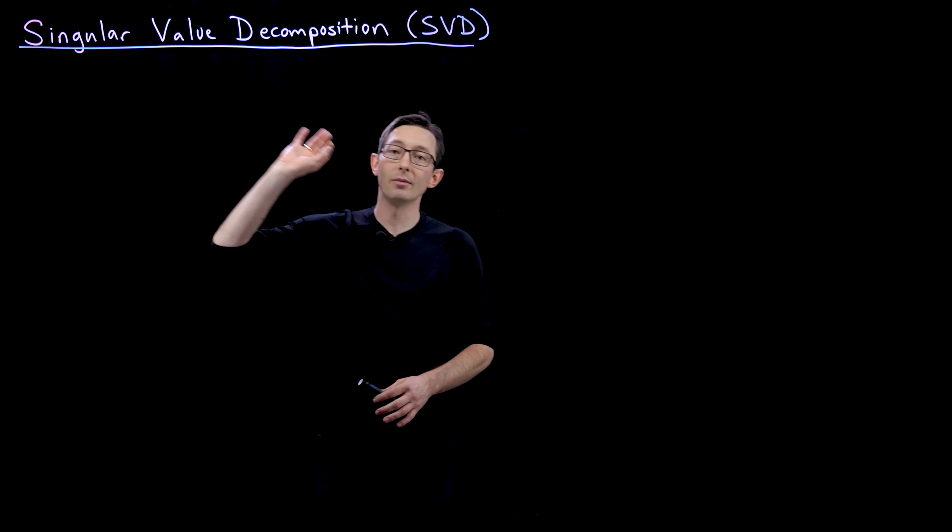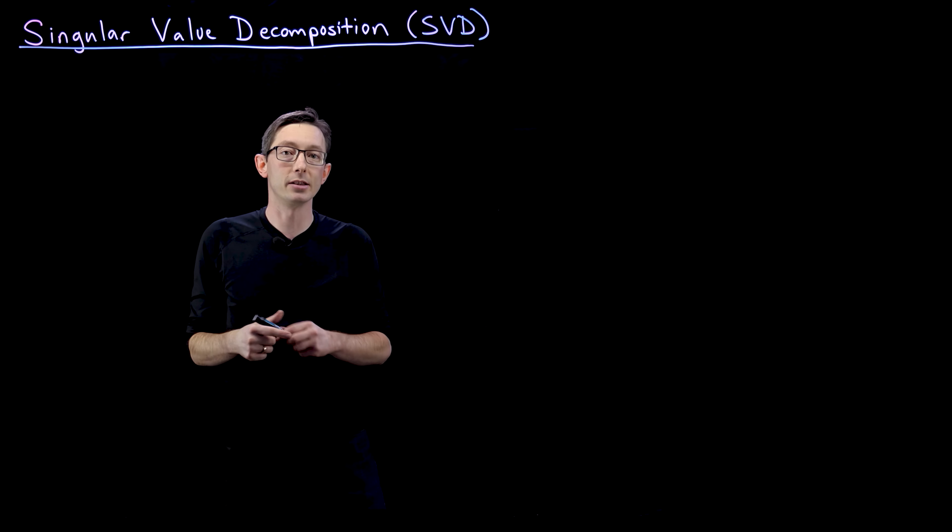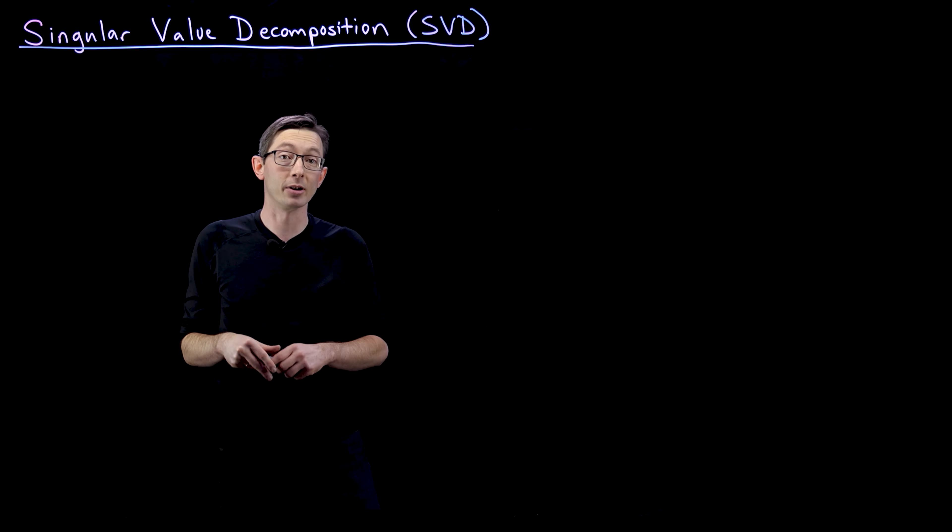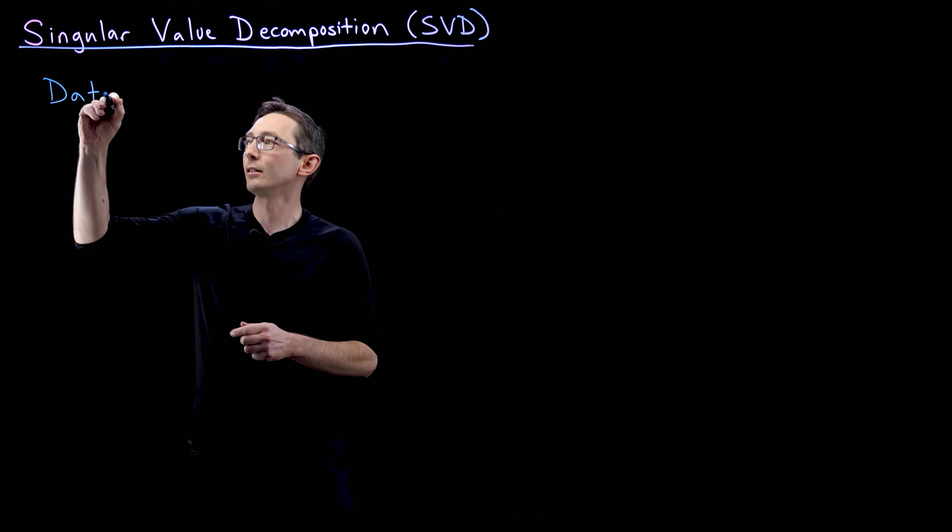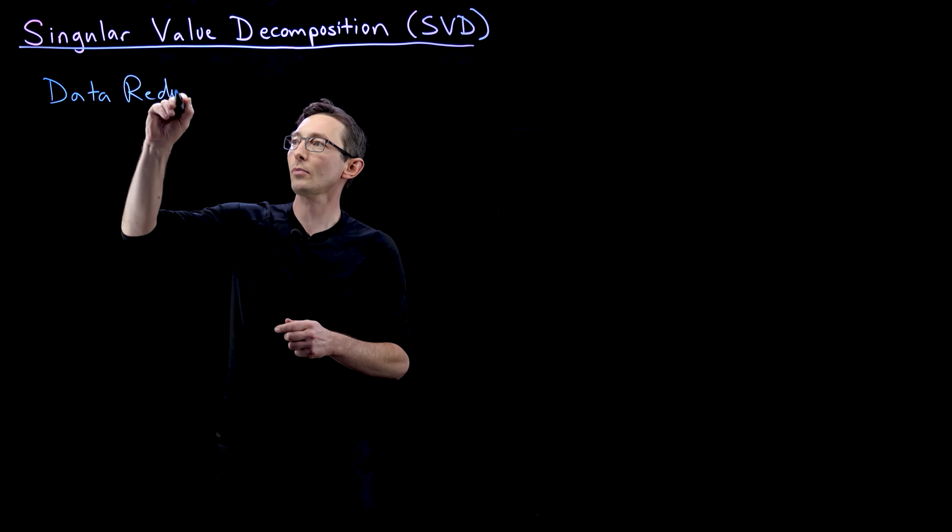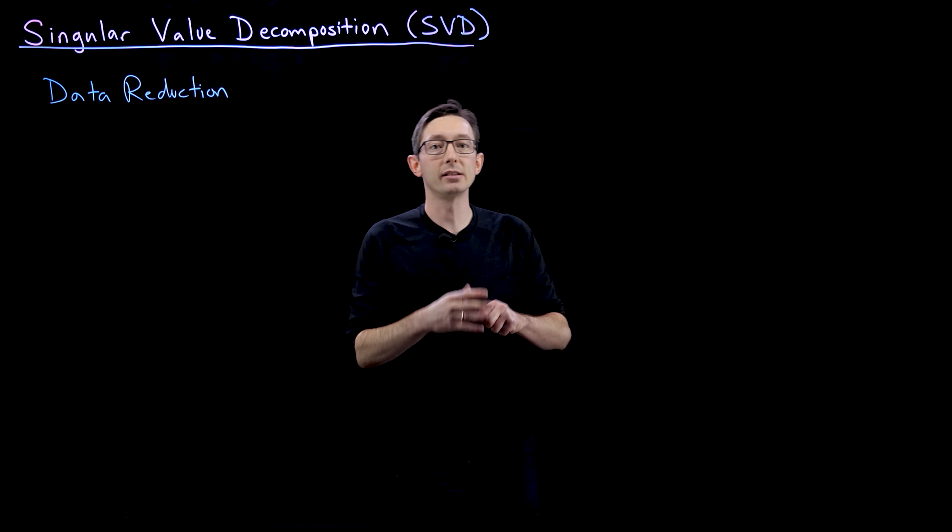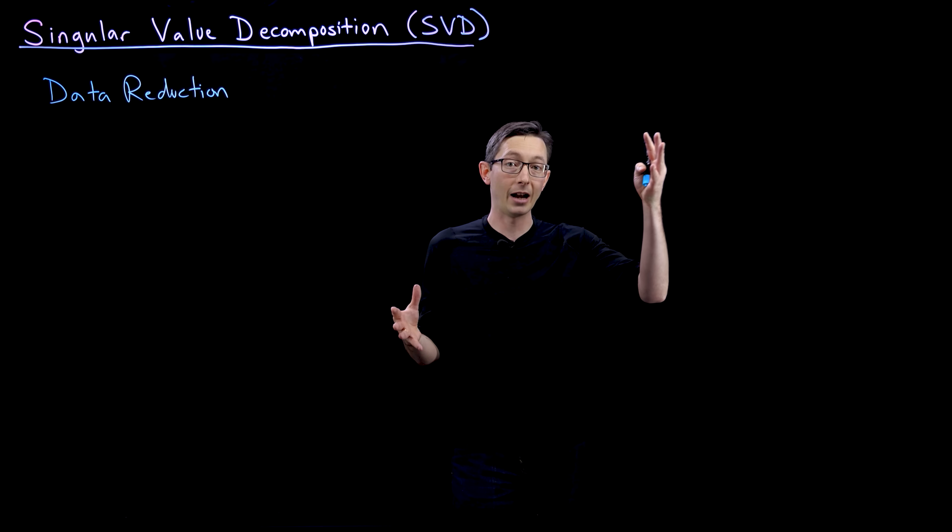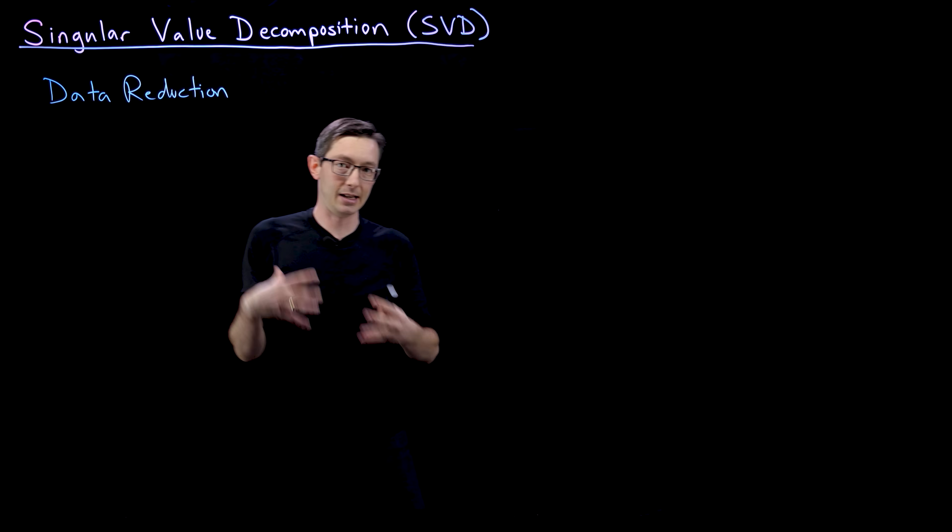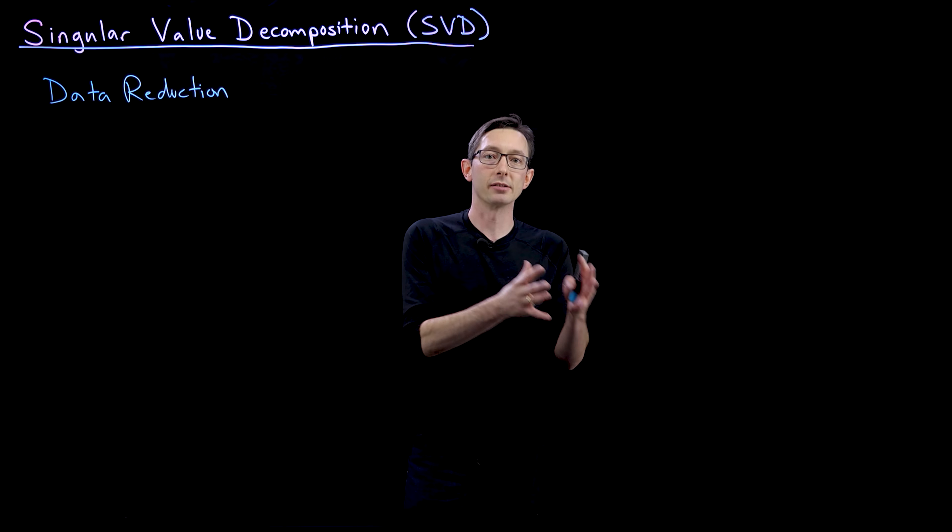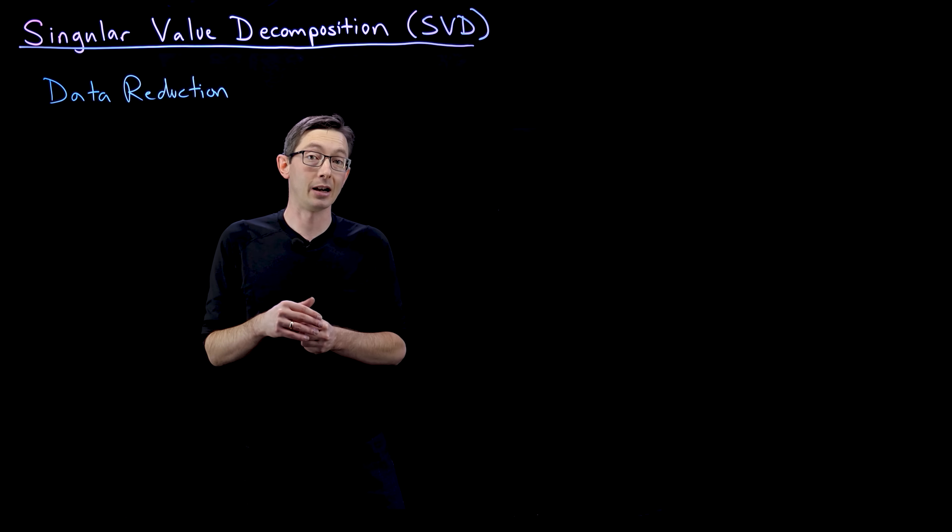So the SVD is one of the most well-used and really just general-purpose useful tools in numerical linear algebra for data processing. So I always think of this as a data reduction tool where you have high-dimensional data, maybe you have megapixel images or you have a video with very very high resolution, you have this big data, and the SVD is going to help us reduce this data into the key features that are necessary for analyzing, understanding, and describing this data.